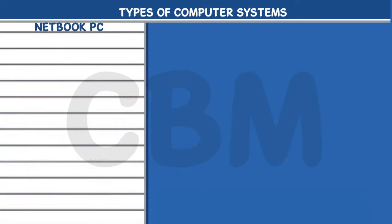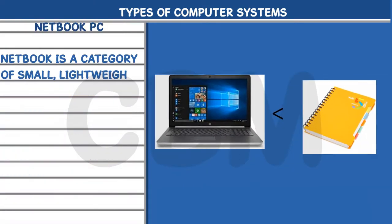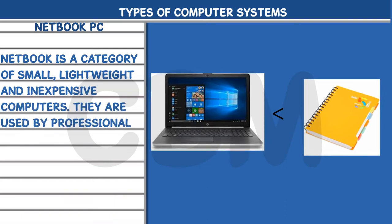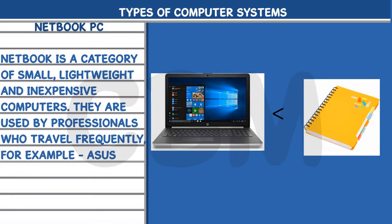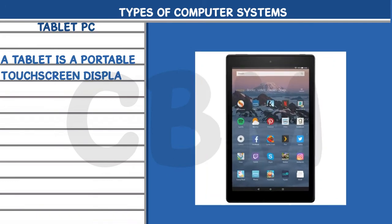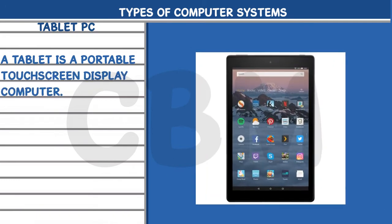Netbook PC: A netbook is a category of small, lightweight, and inexpensive computers. They are used by professionals who travel frequently, for example, the Acer. Tablet PC: A tablet is a portable touchscreen display computer. You can perform all the functions on it. They run on different operating systems, for example, the iPad.